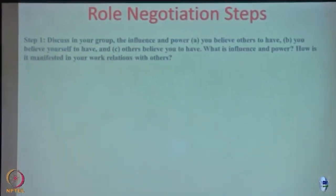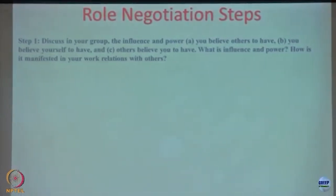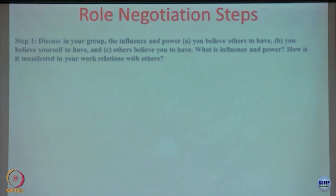The first step is discussion within your group. Suppose there are two groups involved — we can discuss the influence and power you believe others to have, what you believe yourself to have, and what others believe you to have. How is that influence and power manifested in your work relations with others? If two groups are involved in this negotiation, they can have a group discussion to understand what influence and power each group has, and what the other group thinks about the influence and power we have.